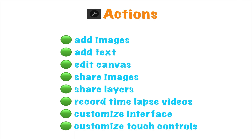You can add images, you can also add text to your artwork, you can edit your canvas, as well as share images and layers. You can also record time-lapse videos, and also customize your interface as well, and your touch controls. Now there's a lot more things that you can do with the Actions button, which I'll be covering in future videos. If I were to cover all of the things that you could do with the Actions button, this Procreate tutorial would run for too long, and would make it very confusing for beginners.